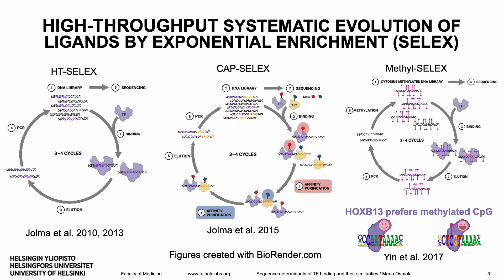TF motifs are derived from short DNA sequences known to bind a TF. Such sequences can be revealed in vitro by a high-throughput systematic evolution of ligands by exponential enrichment, or SELEX. In SELEX, a random DNA library is incubated with a TF. The TF binds to its preferred ligands, and the ligands are then enriched and sequenced. Taipale Labs have performed various SELEX experiments, ranging from simple ones that determine individual monomeric TF motifs to SELEX for studying cooperative binding of two TFs.